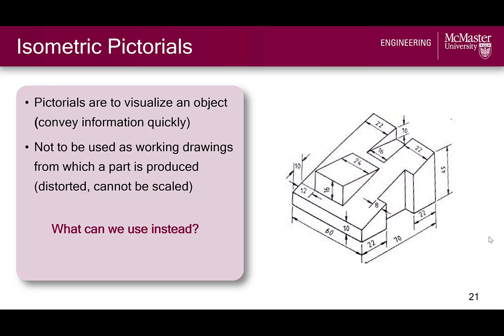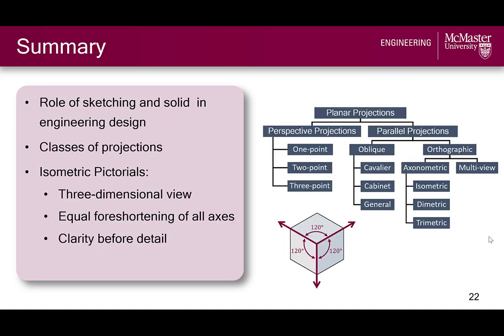So we need to consider another type of projection to use in working drawings for part dimensioning, and this is where multi-view drawings come in. In this video, we considered the role of sketching and solid modeling in the engineering design process, as well as the various classes of projections used to represent 3D objects graphically. We identified isometric pictorials as an excellent projection option for quick 3D visualization of parts whereby object proportions are preserved. Even so, isometrics are not intended to be used as dimensioned working drawings — for that, we need multi-views, which is the topic of the next video.